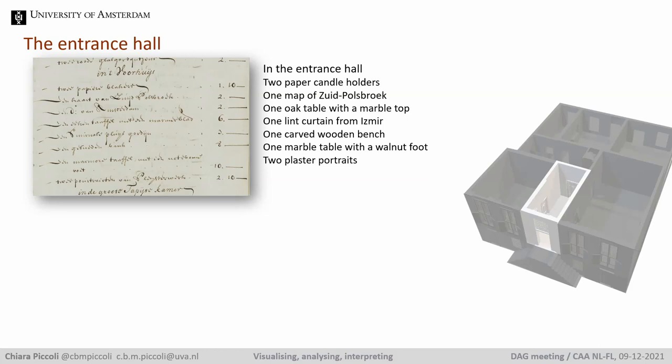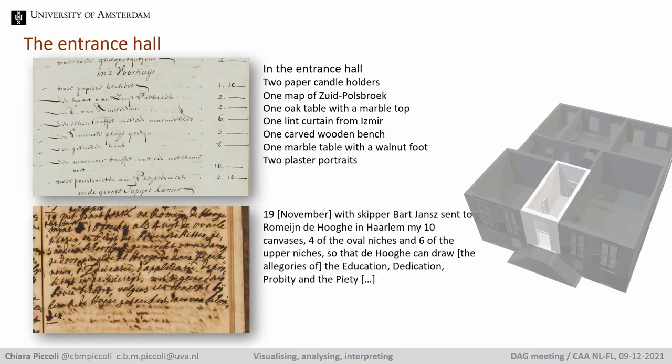If you try to visualize this room in your mind, the walls would have appeared rather empty, given that according to the inventory the only objects on the walls were two maps and the portraits. But the analysis of the almanacs has come to help: we found that the walls were decorated with ten grisaille paintings — a grayscale painting technique that gives the illusion of depth. We also found the allegorical subjects of the four largest ones: Education, Dedication, Probity, and Piety.